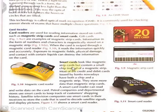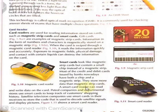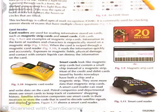Smart cards look like magnetic strip cards but contain a small chip instead of a magnetic strip. Most credit and debit cards issued by banks nowadays have both a chip and a magnetic strip and store more data than magnetic strip cards. A smart card reader can read and write data on the card. Petrol companies and departmental stores use smart cards to keep track of customers' shopping history. Satellite television companies use smart cards in their receivers to store the code used to decode satellite signals and display pictures.